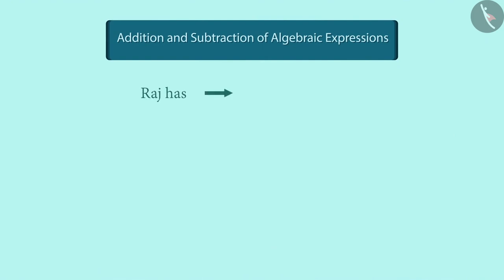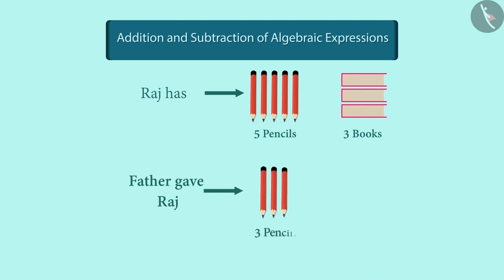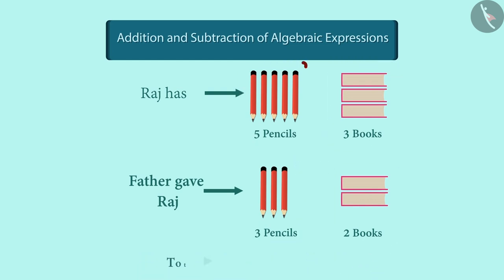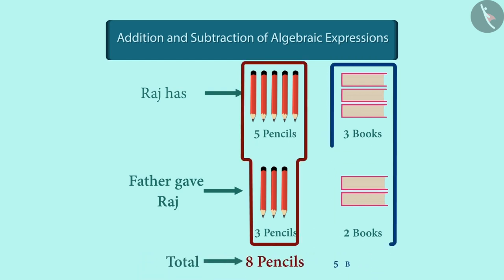Our friend Raj had five pencils and three books. His father gave him three pencils and two books as gifts. How many pencils and books does Raj have now?